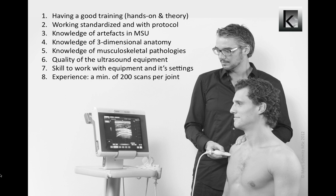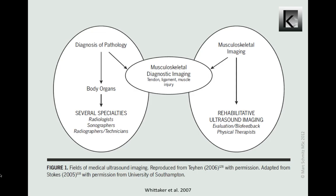Current applications of MSU essentially fall into two distinct areas of musculoskeletal imaging: diagnostic imaging and rehabilitative ultrasound imaging, or in short RUSI. RUSI includes evaluation of muscle structures and behavior as well as the use of MSU as a biofeedback mechanism. Specifically, this includes the measurement of morphological features such as muscle length, depth, diameter, cross-sectional area and pennation angles. More about RUSI will be discussed in the third part of this video presentation.